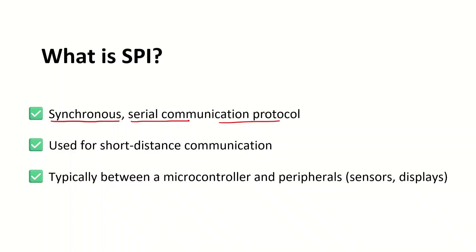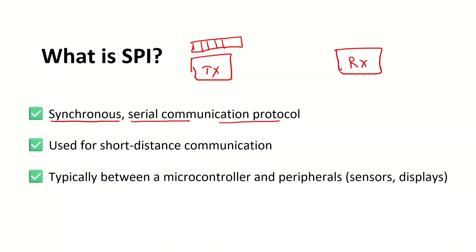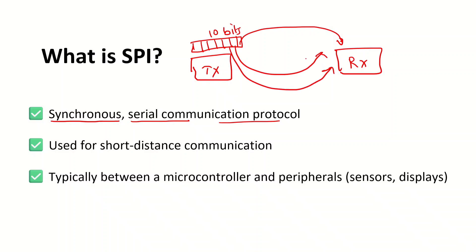What is the meaning of serial communication? Suppose we have a transmission device and a receiver device. At the transmitter side, you have 10 bits. If you send all these 10 bits at a time, that is parallel communication. If you transmit these 10 bits bit by bit — first the 0th position bit, then the first position bit, then the second position bit — transmitting from transmitter to receiver bit by bit serially, then that is called serial communication protocol.